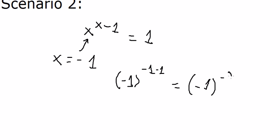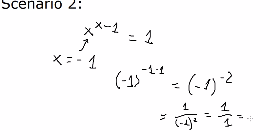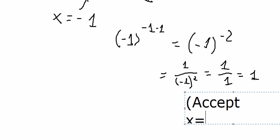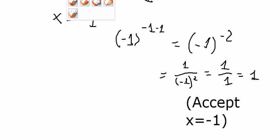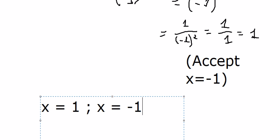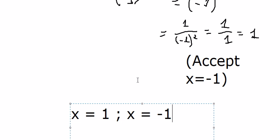Negative one to the power of negative two equals one over negative one squared, which equals one over one, which equals one. This satisfies the equation, so we can accept s equals negative one. Therefore, there are two solutions: s equals one and s equals negative one. That's the final answer. Thank you for watching.